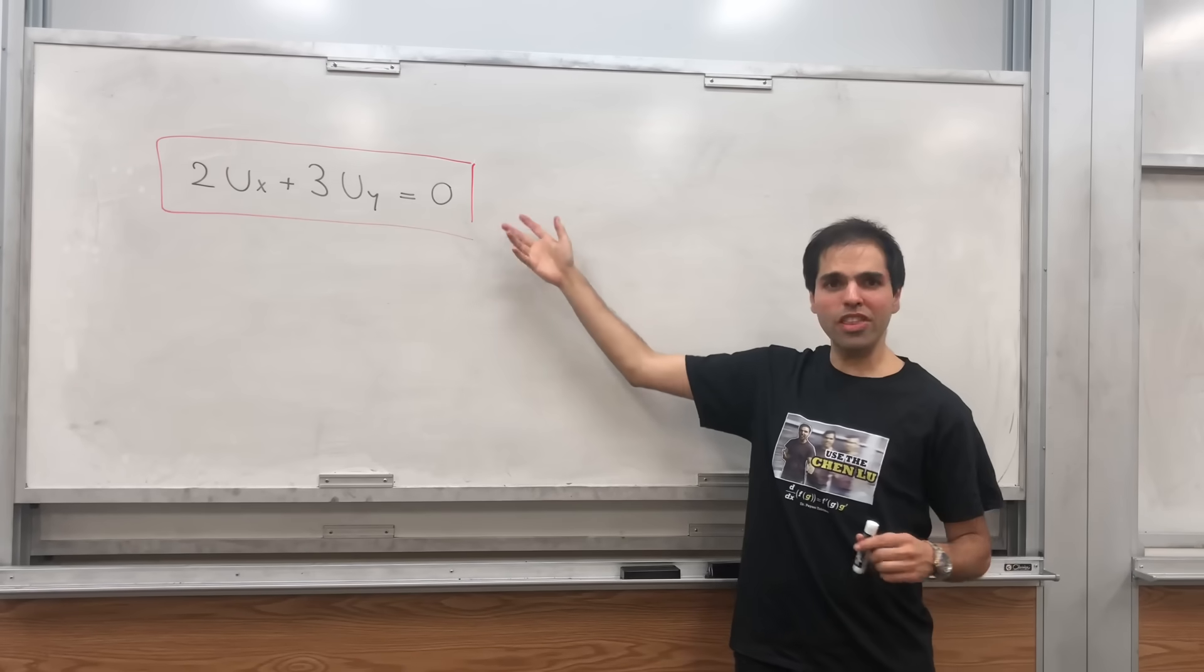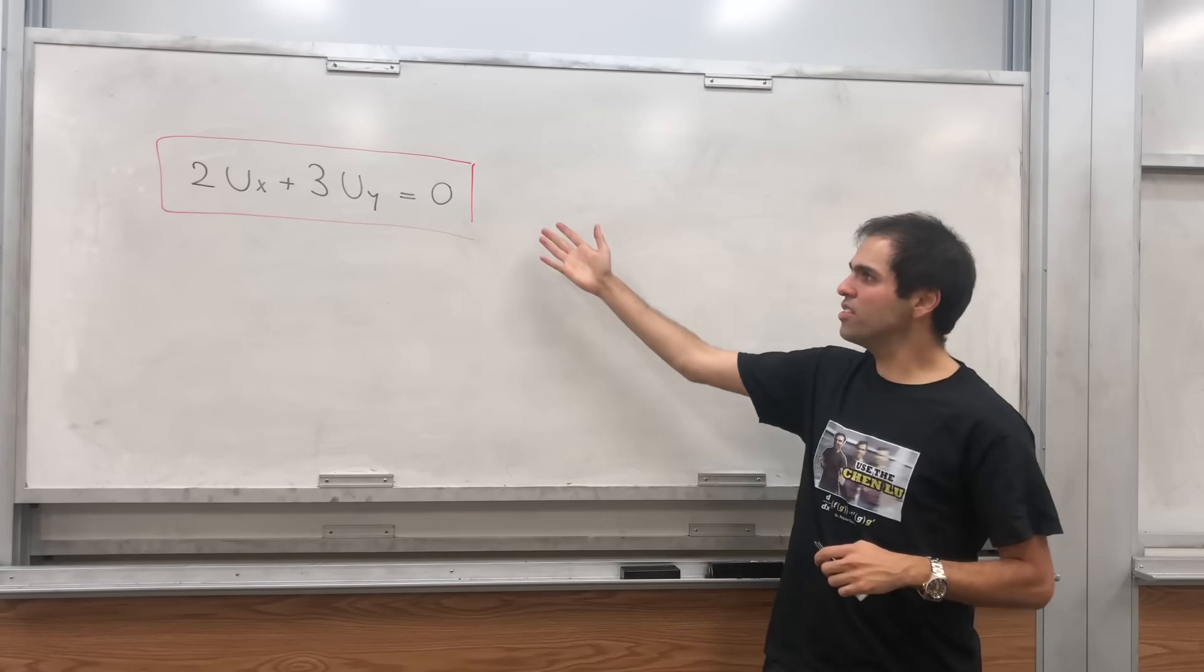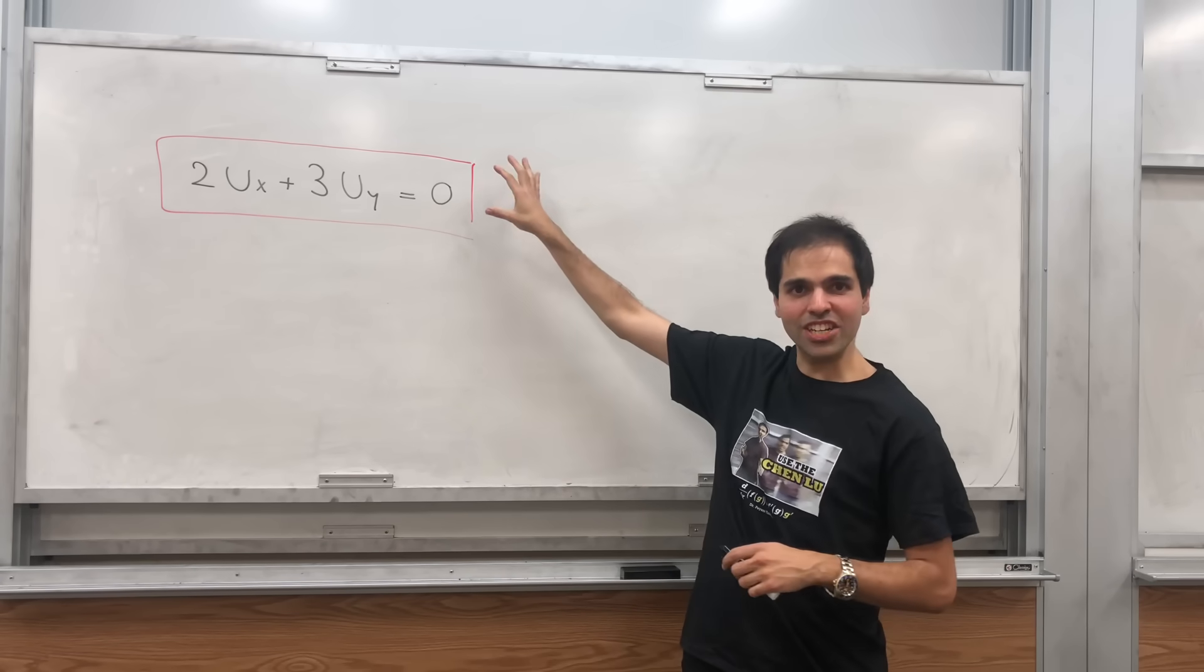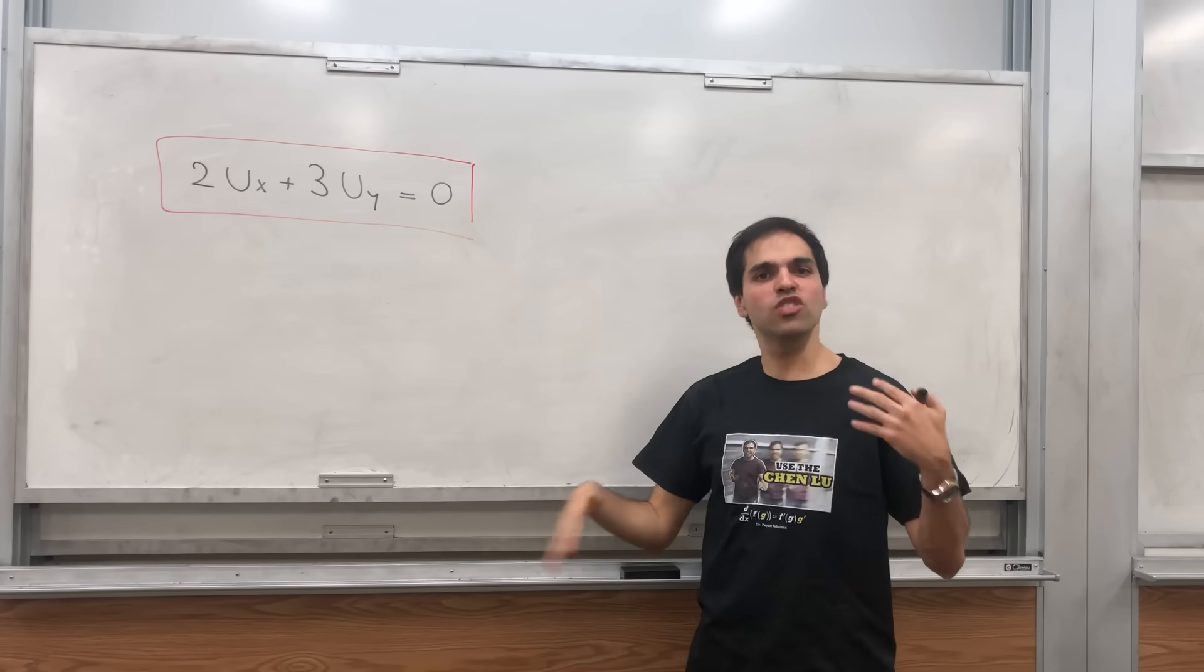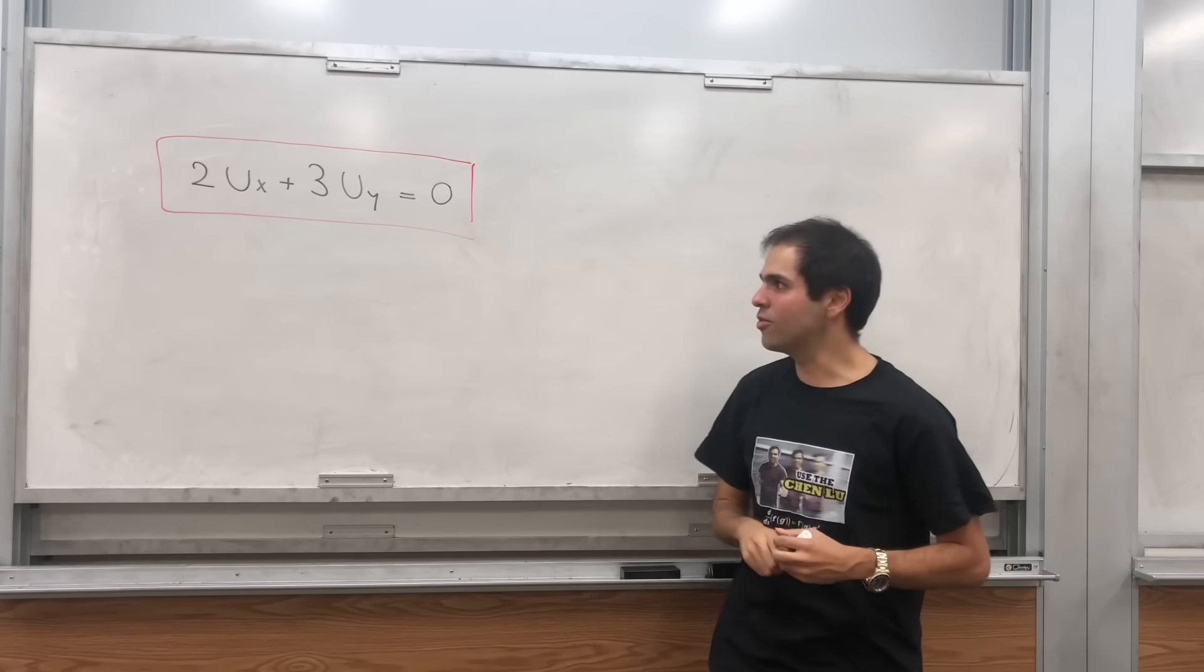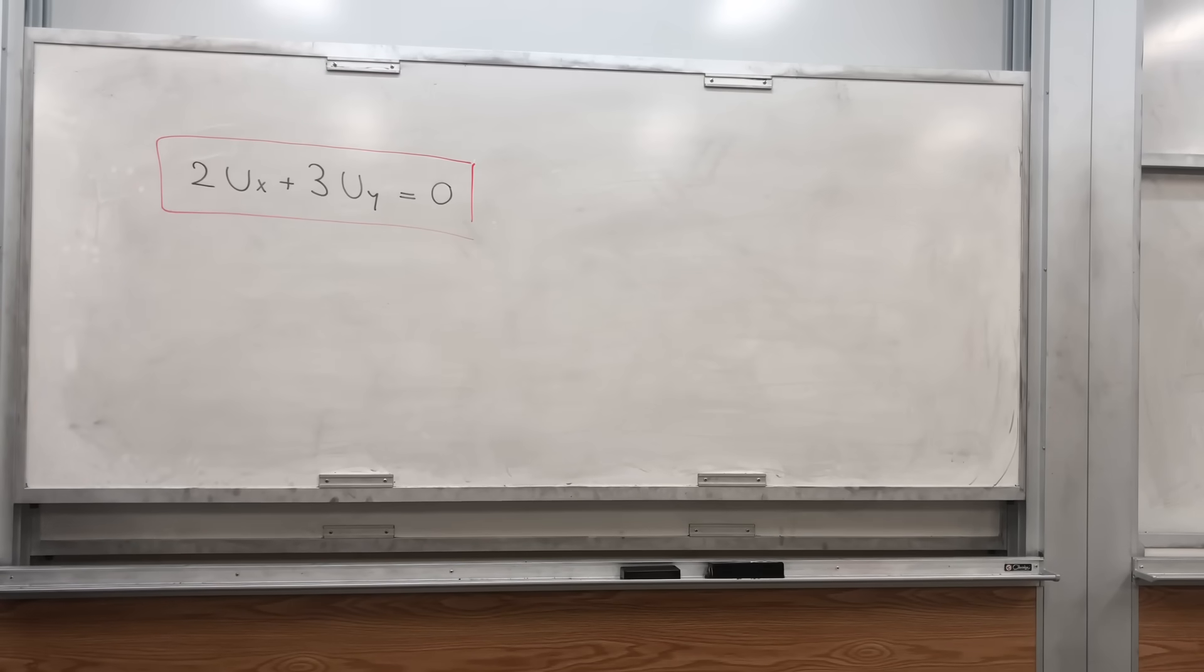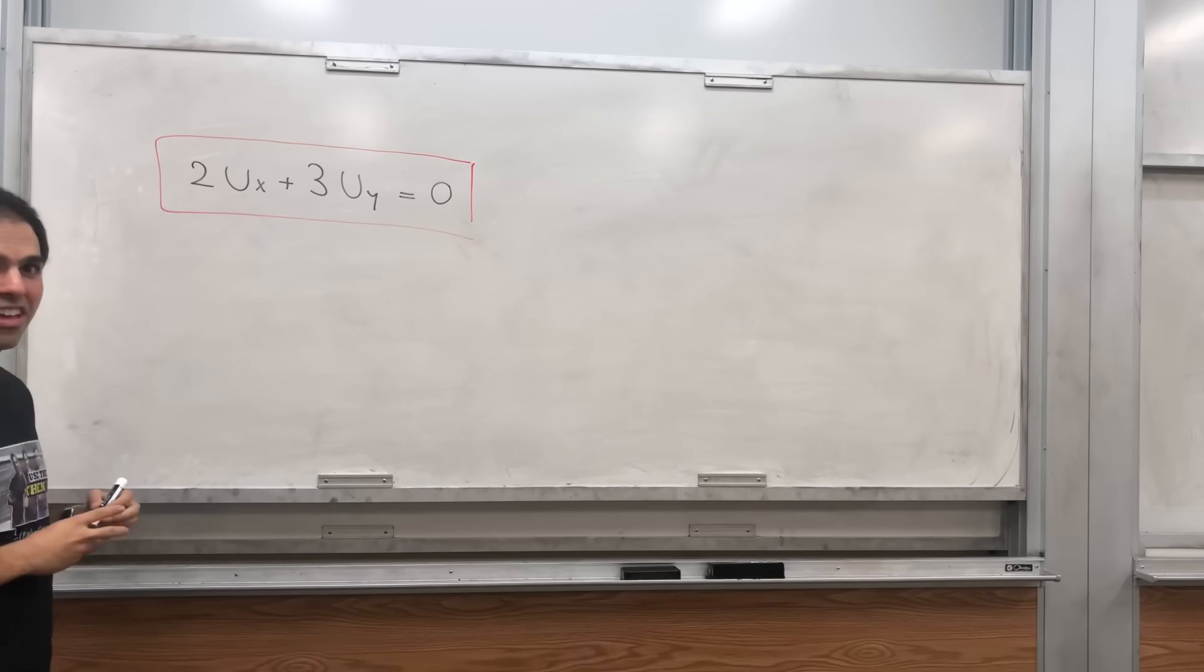The cool thing is we'll employ a sort of geometric method to do this, because notice this equation says that a certain directional derivative of u must be zero, which means that u will be constant along something, and the goal is to figure out what this something is.